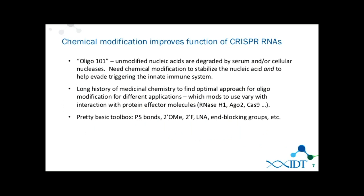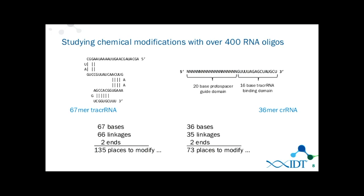Another advantage of using chemically synthesized RNAs is the option to modify the bases. It is fairly well known that unmodified nucleic acids are rapidly degraded in serum or by cellular nucleases, and that chemical modifications can be used to stabilize the nucleic acid and help avoid triggering an innate immune response. There are many different types of modifications in the general toolbox, and with the crRNA and tracrRNA there are many places you can modify. We spent a lot of time studying many modifications, placements, and lengths to come up with a construct that is highly stable and functional in the cell.